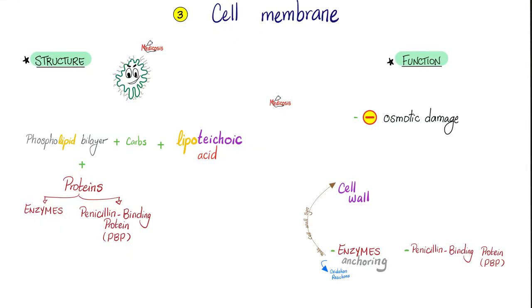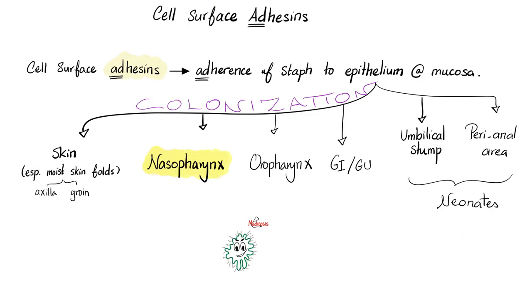Deeper to the cell wall, we find the cell membrane — just like your membrane — with a lipid bilayer, some carbohydrates, and something unique to gram-positives: lipoteichoic acid, which functions in prevention of osmotic damage and acts as an anchor for enzymes. This is also where penicillin binds. It's not just the slime layer that helps staph adhere to artificial prostheses — staph also has adhesins for adhering to your own cells. That's why many people have staph aureus living in their nasopharynx as part of normal flora.